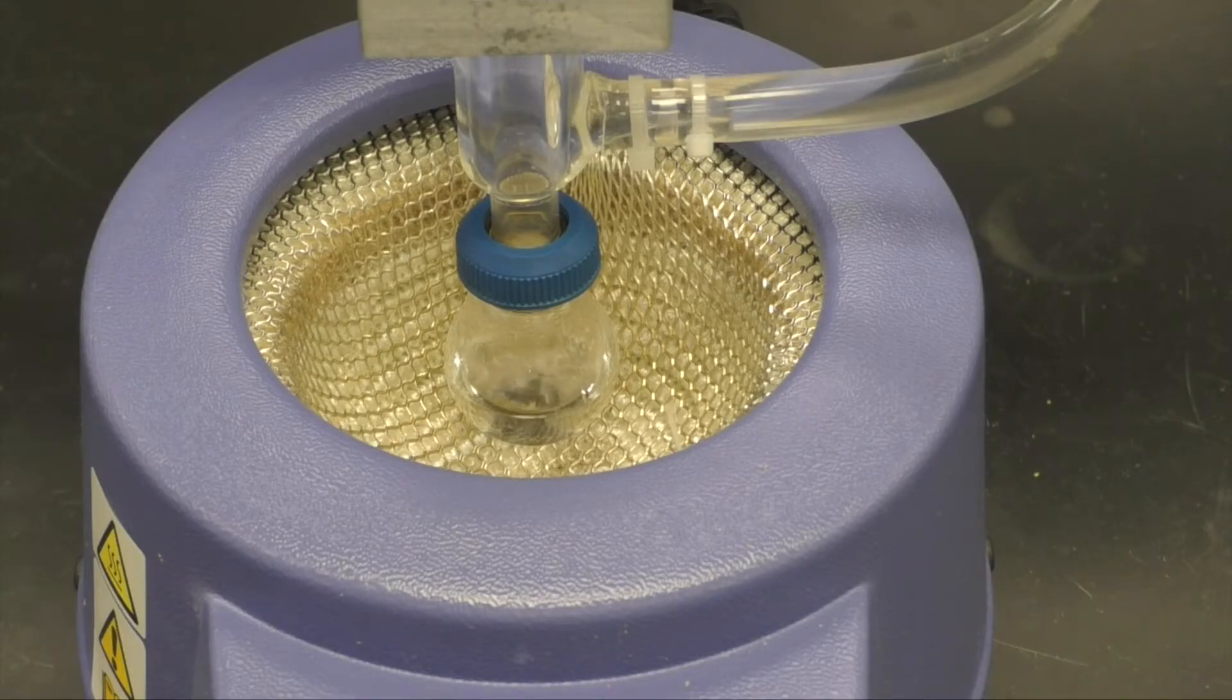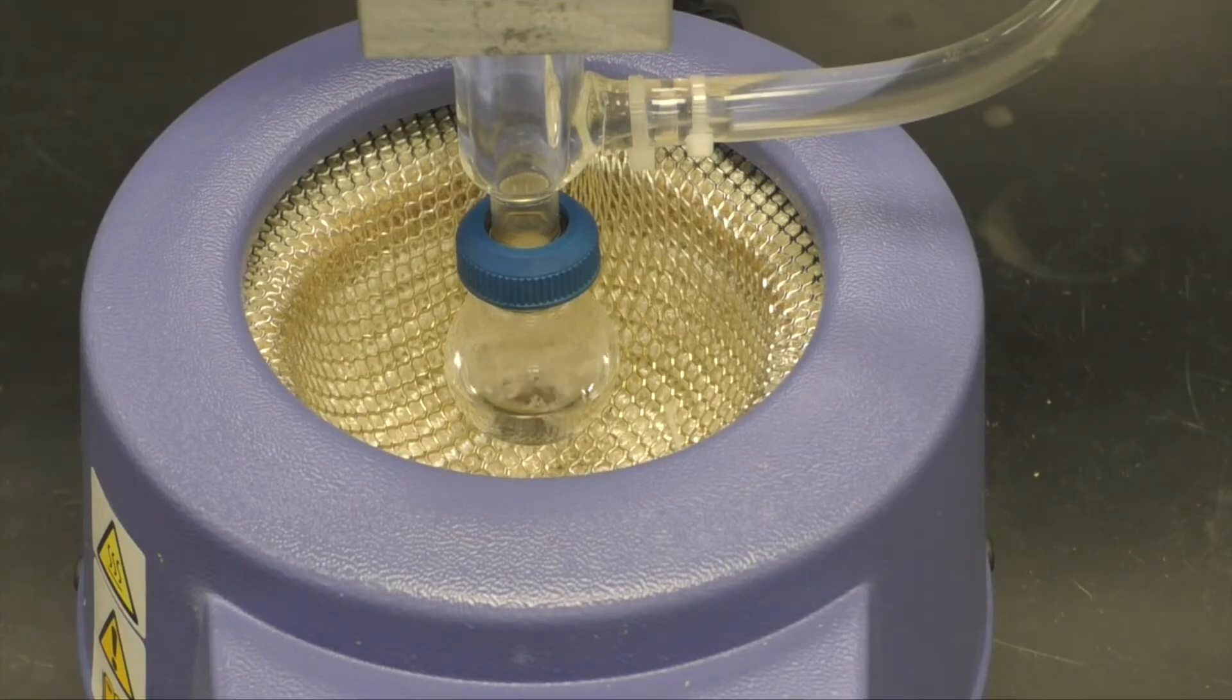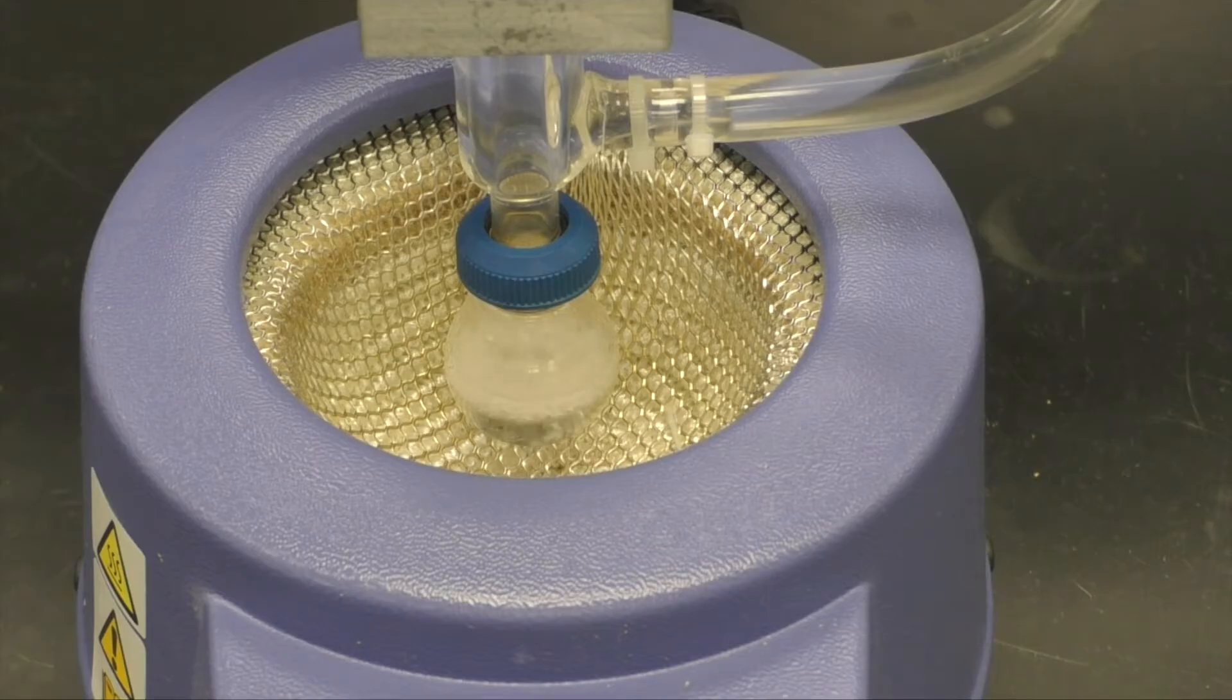Your mixture will come to a rapid boil and begin to reflux. You should adjust your heat setting down to around 6 or 7 at this point.